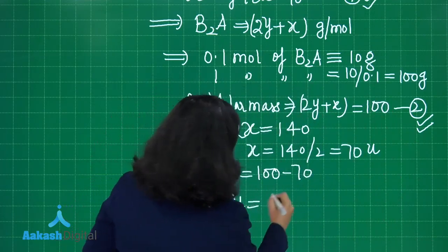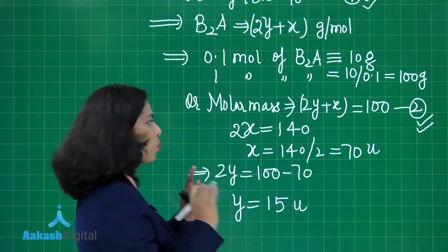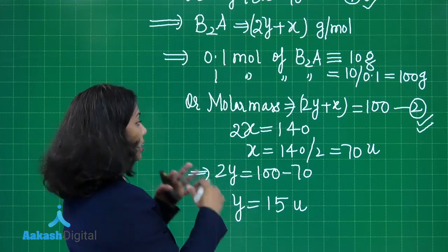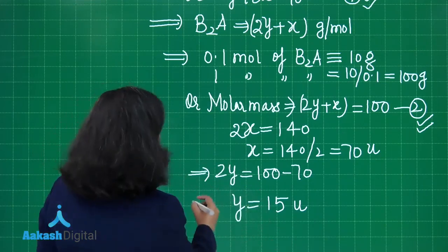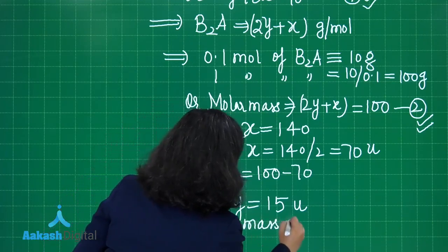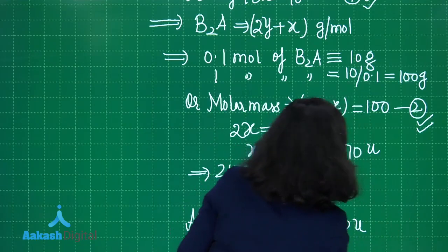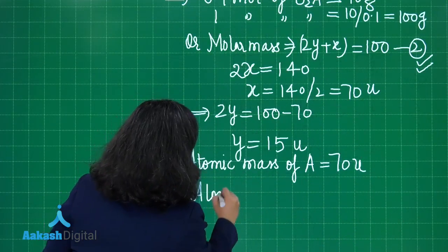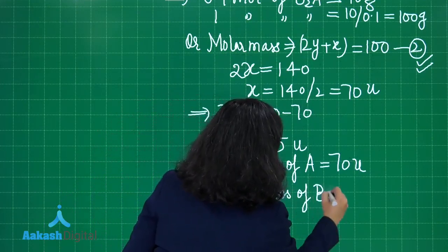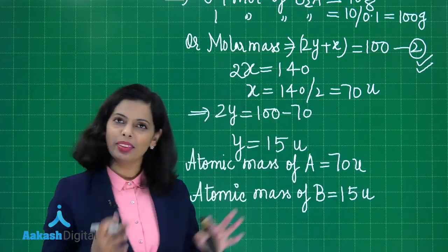Substituting x = 70 into equation 2: 2y + 70 = 100, so 2y = 30, giving y = 15. However, the speaker states y = 50 directly. The atomic mass of A is x = 70 u and the atomic mass of B is y = 50 u as given in the solution.